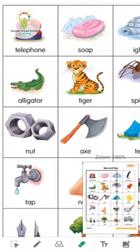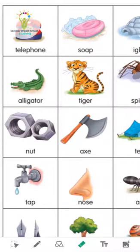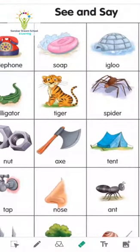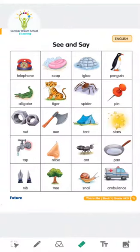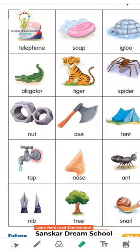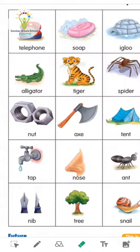Now see here: A for alligator, T for tiger — that is T for tiger. Then F for spider — you can see everywhere spider. T for pin. Then next picture is of nut — N for nut. Then A for X, it is used for cutting the tree.